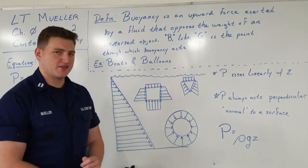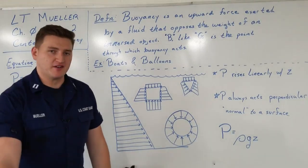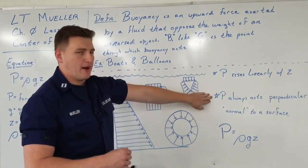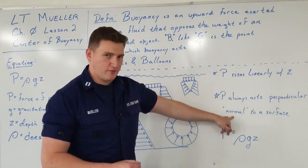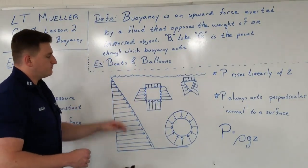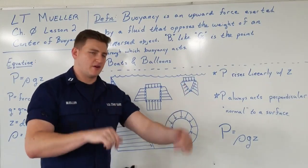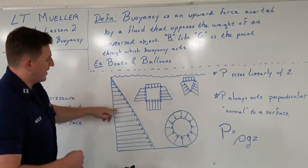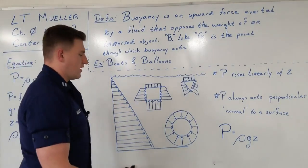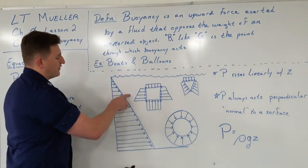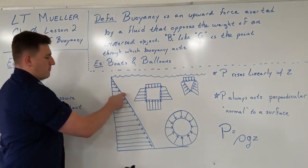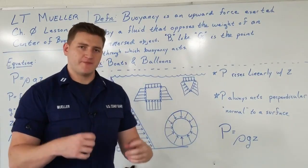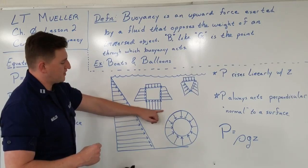We have three immersed objects in this tank, all showing different ways that pressure reacts onto different surfaces. Pressure rises linearly with Z, the depth. Another note is that pressure always acts perpendicular, or normal, to a surface. In this first example we have a square with one side on top, one on bottom, and two on the sides. On the very top we have a pressure of one magnitude, and on the bottom a larger magnitude — so there is more force on the bottom pushing up versus the top pushing down. The side arrows cancel each other out, so as long as the square doesn't crush, there will be a buoyant force due to the difference in pressures from bottom to top.